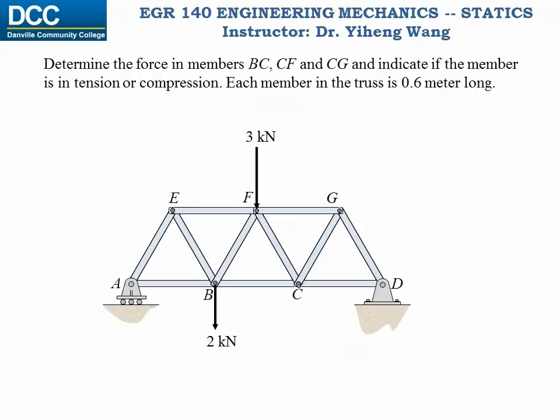Let's look at this example. For this structure, we are not asked to solve for all members, just BC, CF, and CG. Therefore, instead of using the method of joints, we use the method of sections, because this way there are fewer steps involved. Since we need to solve for the forces in members BC, CF, and CG, we can run an imaginary cut through these three members.